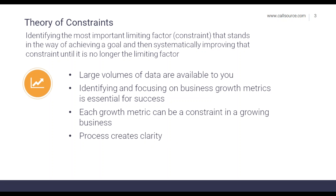There's a lot of data available to you, so knowing how to separate the metrics responsible for growth from all other data clarifies what needs to be managed. Each growth metric can be a constraining point in a business, and knowing how to implement a process of ongoing improvement allows you to identify the most important constraint standing in the way of your goal. In order to achieve higher results, whether in personal life or business, you do need to set goals — a business cannot manage for improvement without understanding where it's finding success and where there's opportunity for improvement.